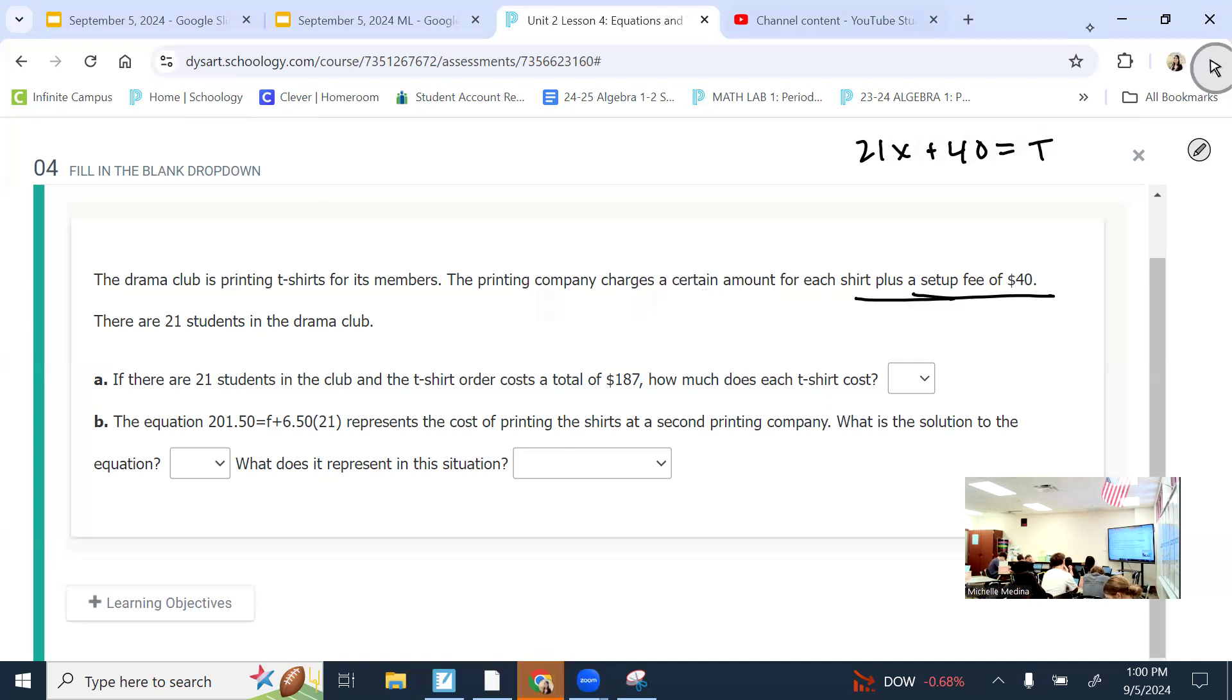So, then that's something that varies. I'm going to use a variable for that. So, we could use this expression to represent my cost for the shirts. I have 21 people to account for plus that $40 fee. If there are 21 students in the club and the t-shirt order costs a total of $187, where would I need to put that $187, for the x or for the t? T. Because that was my total cost. So, when I plug it in the right spot, I can actually start solving it. What do I get rid of first? The 40. Good. And I cancel it out by subtracting.